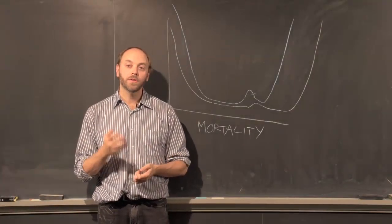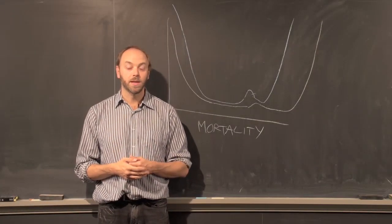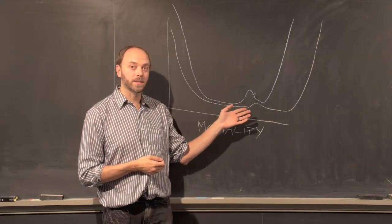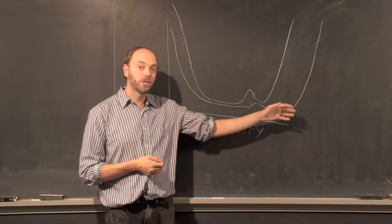You'll recall from last week that one of the trends we see throughout the Pleistocene, but accelerating at the end of the Pleistocene, is a reduction in adult mortality and associated expansion in human longevity.